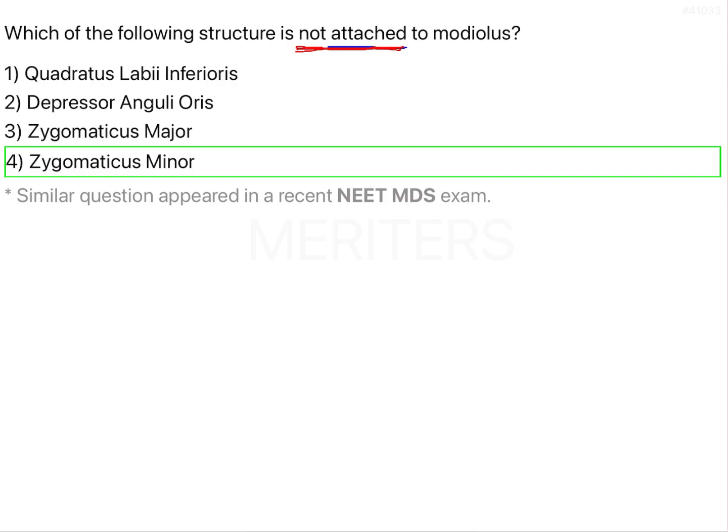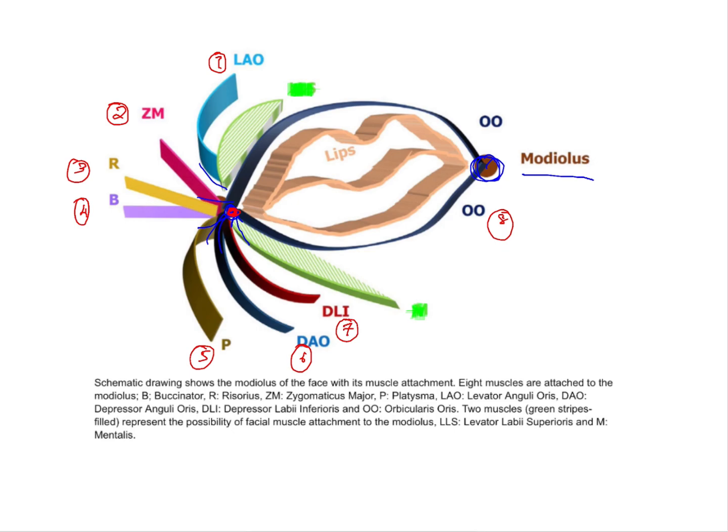Additionally, you need to know the nerve supply and arterial supply of the modiolus. The nerve supply of the modiolus is by the facial nerve, and the arterial supply is by the facial artery.